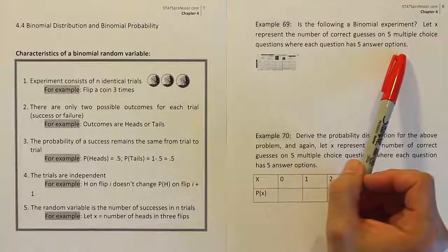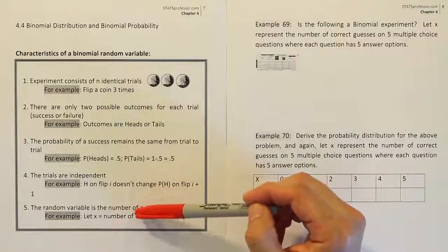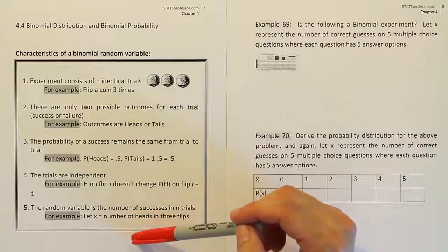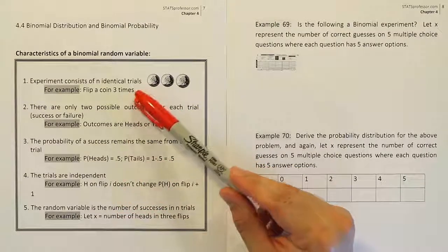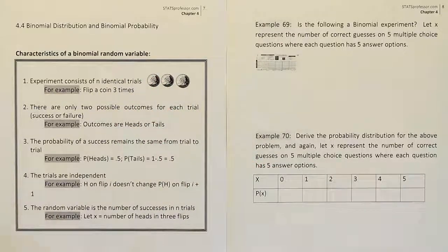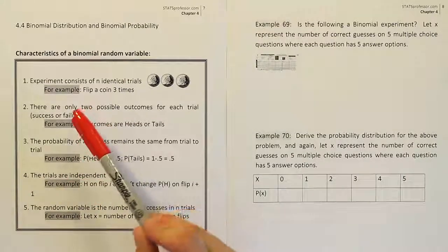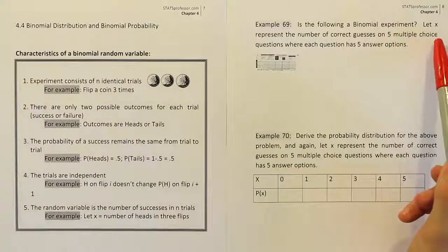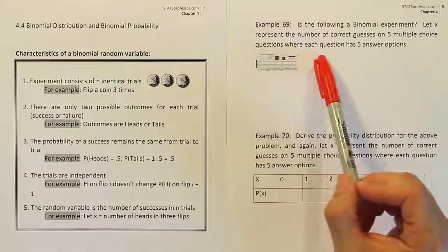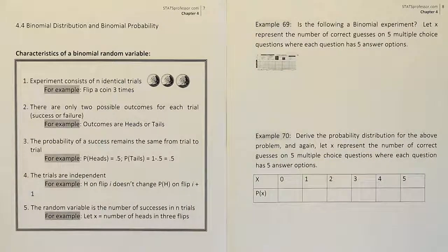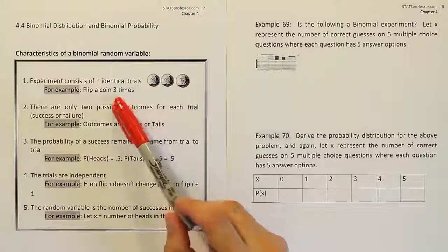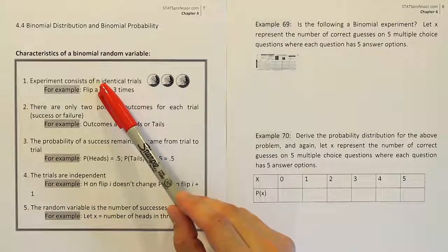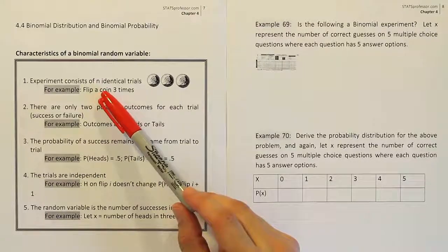When you look at this problem, the first thing you want to do is run through the list of five characteristics for the binomial random variable. These characteristics will help us determine if this problem involves a binomial experiment. The first thing we need to check is whether the experiment consists of n identical trials. We're taking guesses on five multiple choice questions, and each question has five answer options, so each trial is identical. N equals five here, so criteria one is met.